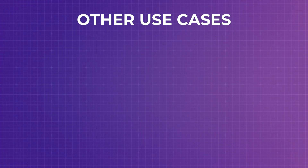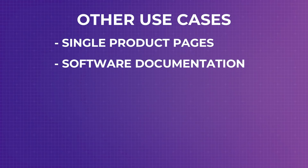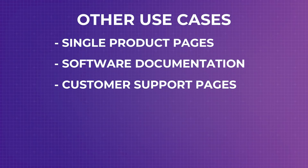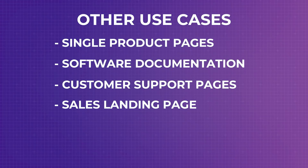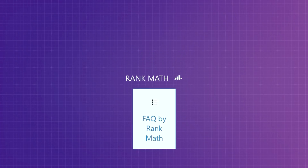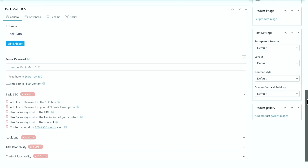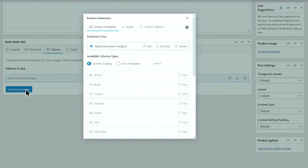Other use cases where we think the FAQ schema will be helpful are: single product pages where you need to include an FAQ section, software documentation where you are creating tutorials about your software and you have an FAQ section, support and customer service pages where an FAQ section is needed, a sales landing page where FAQ is present, and basically any pages where you think an FAQ section makes sense. In case you are not able to use the FAQ block from the blog editor — for example, at this moment WooCommerce is still using the classic editor — what you would need is a schema generator that is included in the Rank Math Pro. We will show you an example of it when we are talking about the best practices.